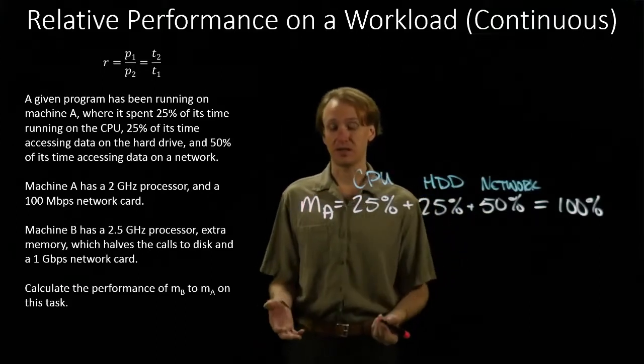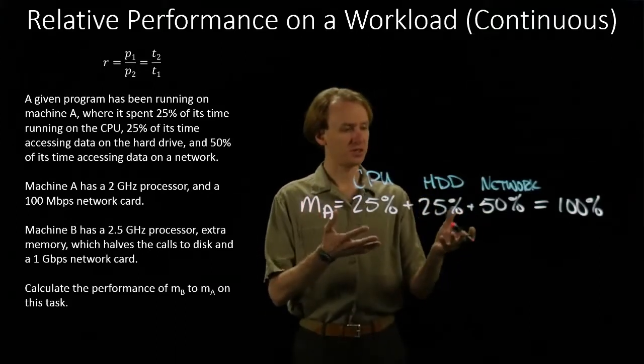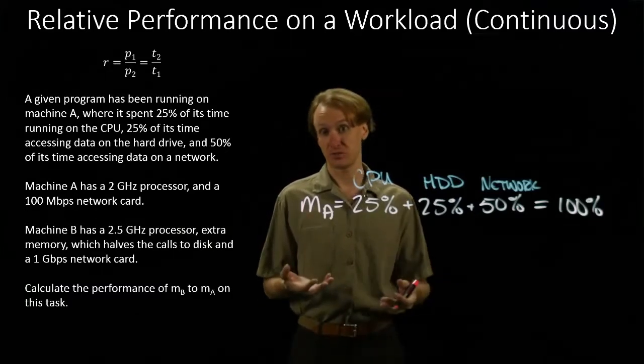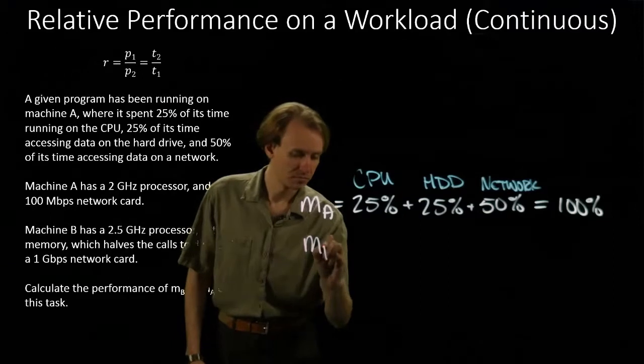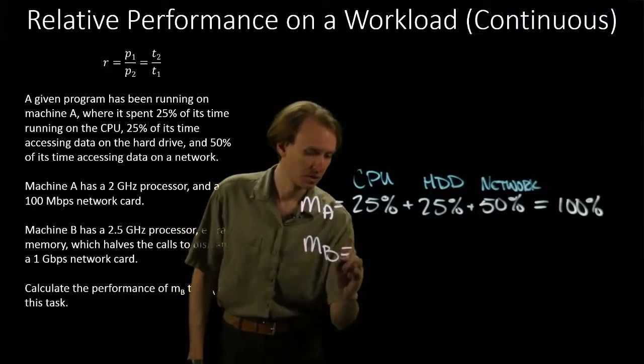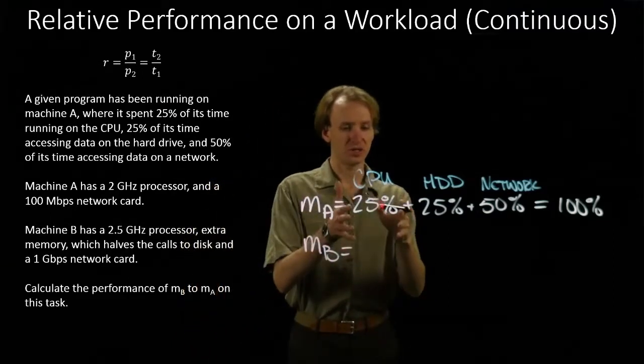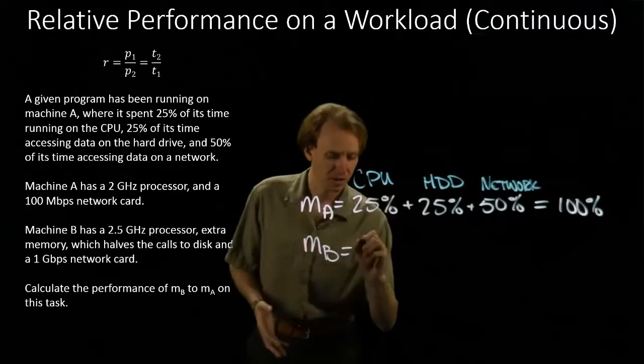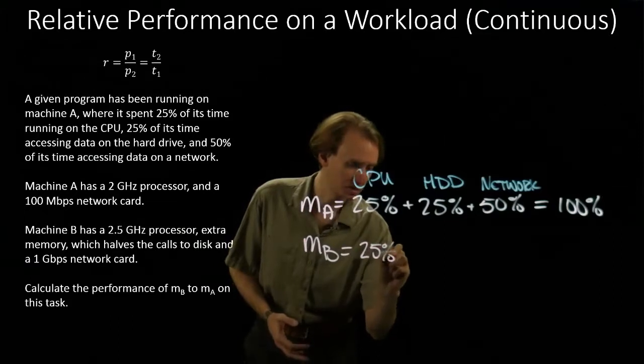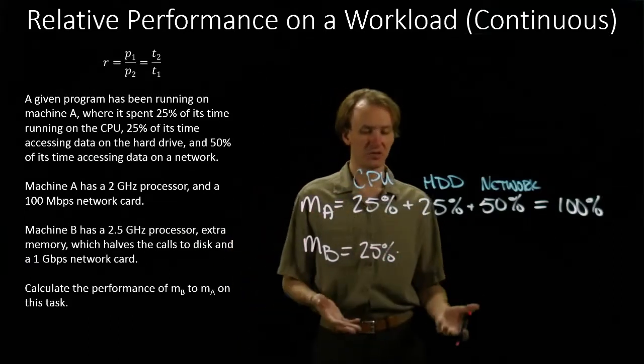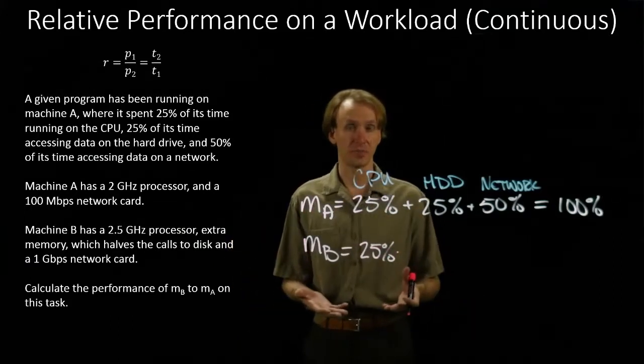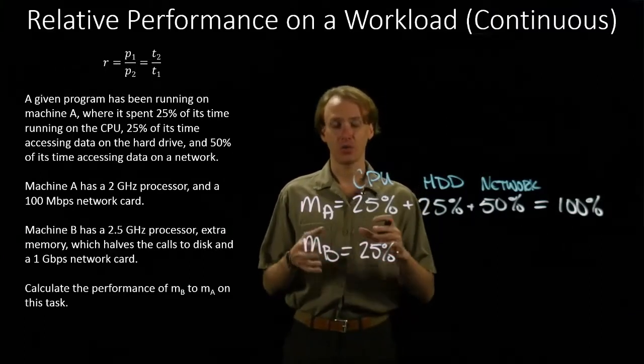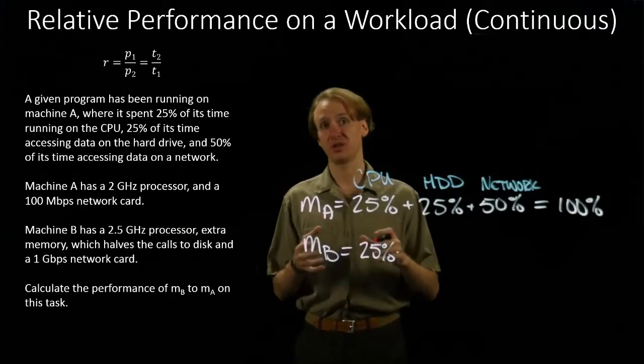So machine B will actually make us think. We will have to do something to manipulate these numbers that we've got from machine A, so that we can get an estimate from machine B. So to begin with, we know that we still have this same amount of CPU work to run. So we'll start with that 25%. 25% of the workload is CPU instructions.